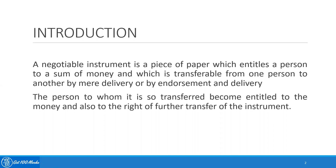So the introduction to a negotiable instrument. A negotiable instrument is a piece of paper which entitles a person to a sum of money and which is transferable from one person to another by mere delivery or by endorsement and delivery. The person to whom it is so transferred becomes entitled to the money and also to the right of further transfer of the instrument.